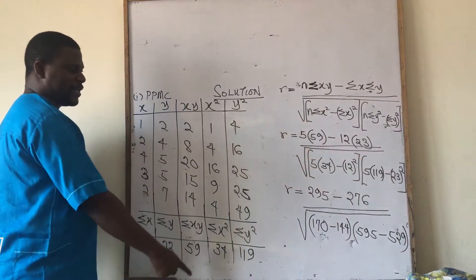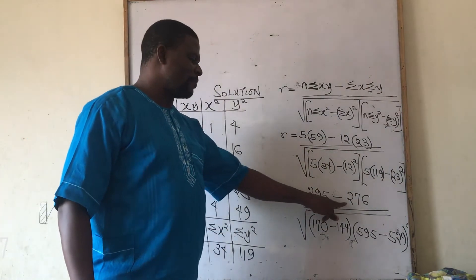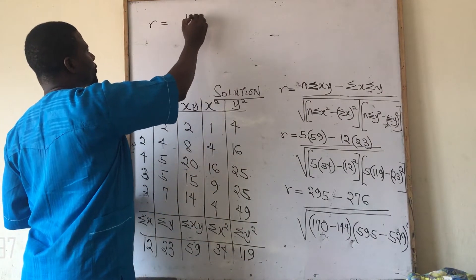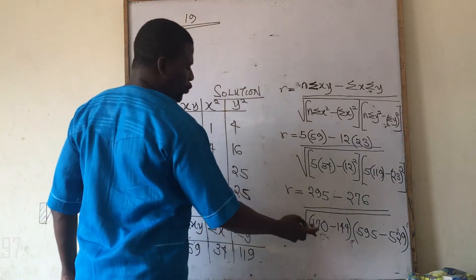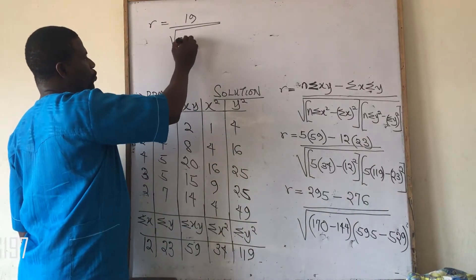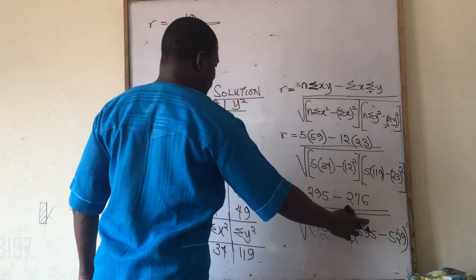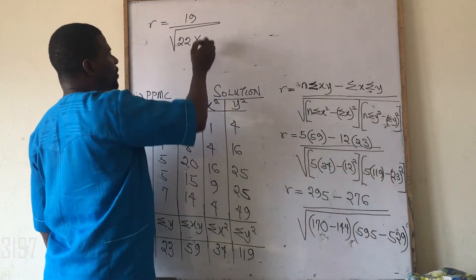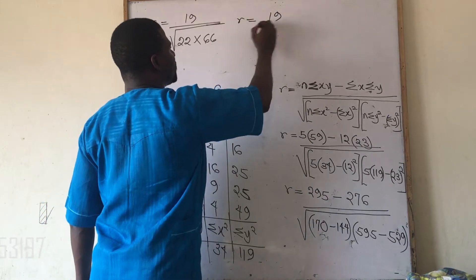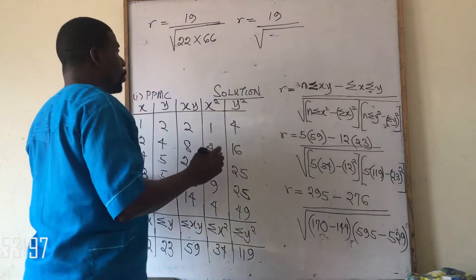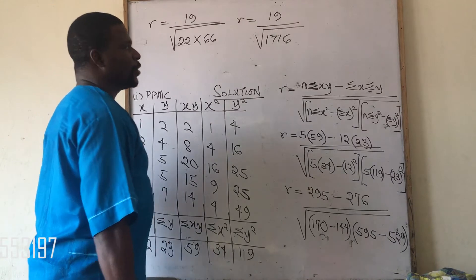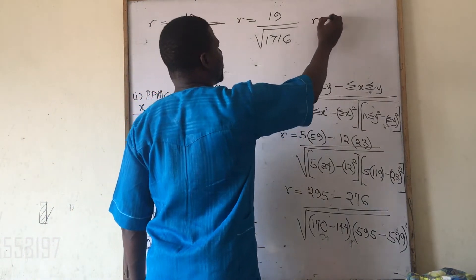From here, 295 minus 276 gives 19 for the numerator. Under the square root, 170 minus 144 gives 26, and 595 minus 529 gives 66. So r equals 19 over the square root of 26 times 66, which gives 1716.